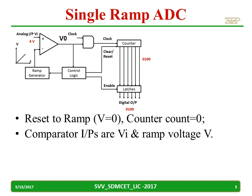Initially, reset the ramp so that the ramp voltage will be zero and the counter is equal to zero. For the comparator, we are given two inputs: one is VI (the input voltage) and the other is the ramp voltage V.